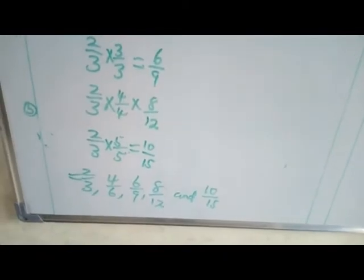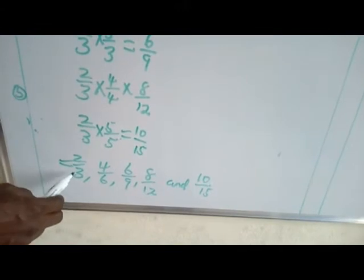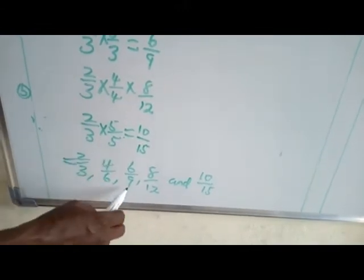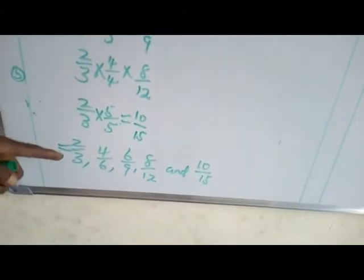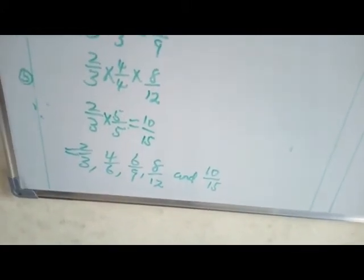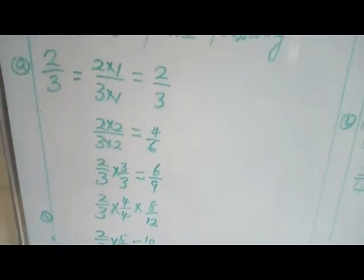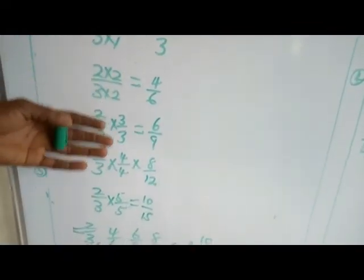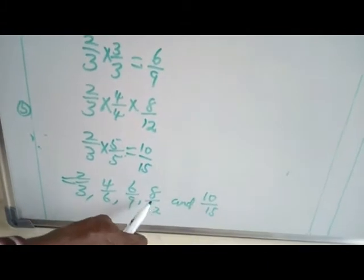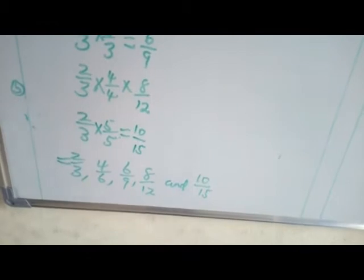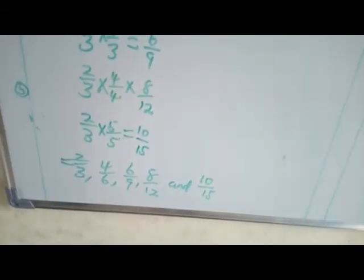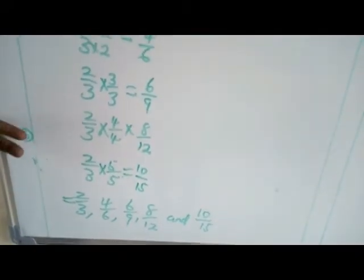All these are the equivalent fractions. You can now write them out: 2 over 3, 4 over 6, 6 over 9, 8 over 12, and 10 over 15. What this means is that all these fractions are almost the same. Because if I divide this, it's going to give me this fraction. If I reduce them, all of them are going to give me the same fraction. That's why we say they are equivalent. They are almost the same. That is the meaning of equivalent fraction.